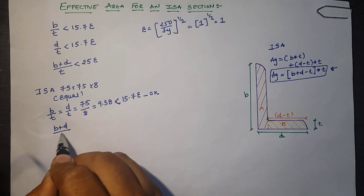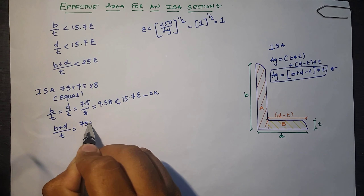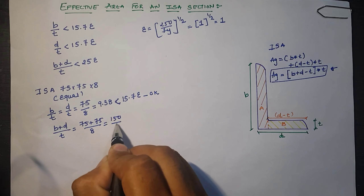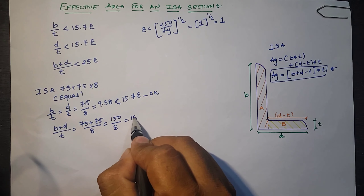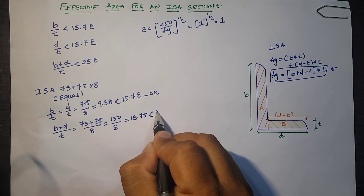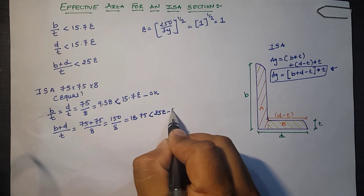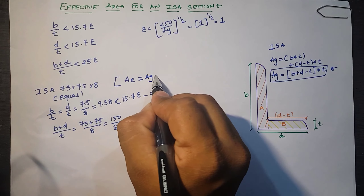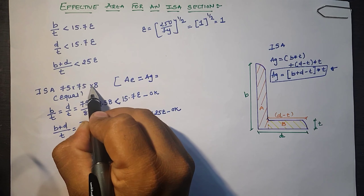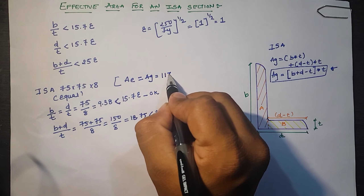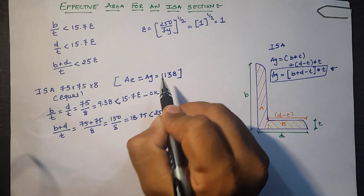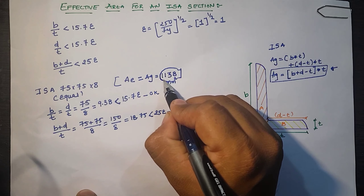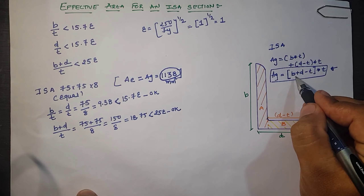For the third criterion: (b + d)/t = (75 + 75)/8 = 150/8 = 18.75, which is less than 25ε — so it is okay. All three criteria are satisfied, meaning the effective area equals the gross area. From the steel table, for ISA 75×75×8, the gross area is 1138 mm².